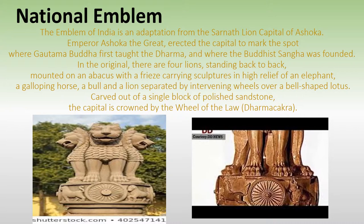The national emblem of India is an adaptation from the Sarnath Lion Capital of Ashoka. Emperor Ashoka the Great erected the capital to mark the spot where Gautam Buddha first preached the Dharma and where the Bodhisattva Sangha was founded. In the original, there are four lions standing back to back mounted on an abacus.